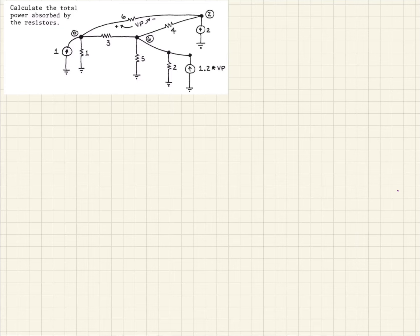This is a pretty involved example using nodal analysis. What they're ultimately asking us to do is calculate the total power absorbed, which could also be seen as the total power supplied by these three current sources, one at each node. That seems like the easier way since those are the only things driving this circuit. But let's go ahead and solve this using nodal analysis.